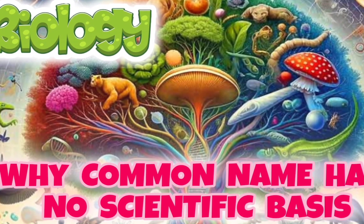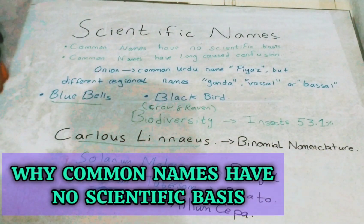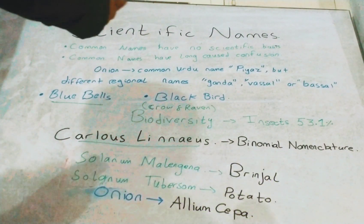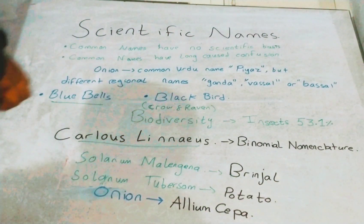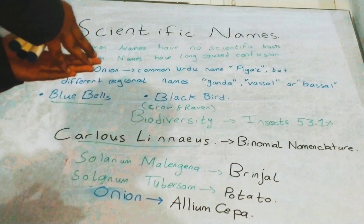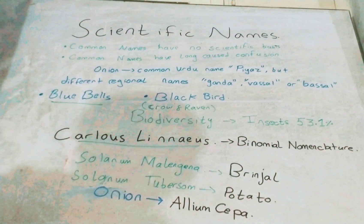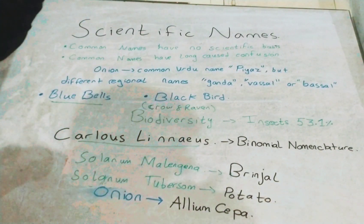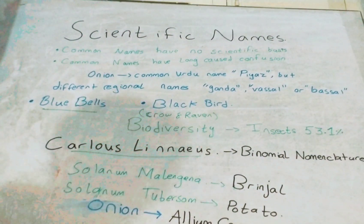Common names have no scientific basis. For example, the vegetable onion has the common name 'Piaz,' but it also has many regional names — in many regions of our country, onion is also referred to as 'benda' or 'basal.' This causes a lot of confusion, especially for scientists who use these species for research purposes.